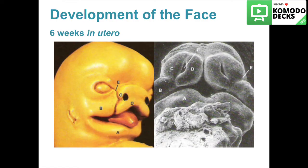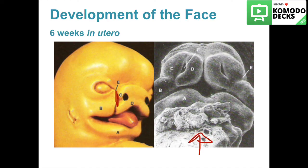Part A shows the mandibular processes, B the maxillary process, C the lateral nasal process, and D the medial nasal process. E is the nasolacrimal groove — also called the naso-optic groove or furrow — which separates the maxillary process from the lateral nasal process. In an axial plane view using a scanning electron microscope, you can see the buccal nasal groove, which separates the maxillary process from the medial nasal process.